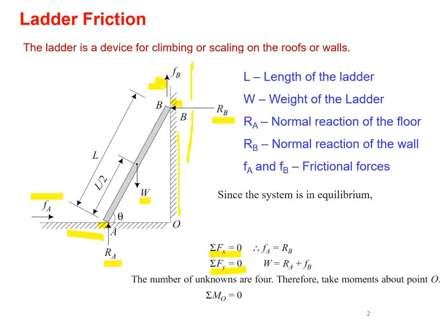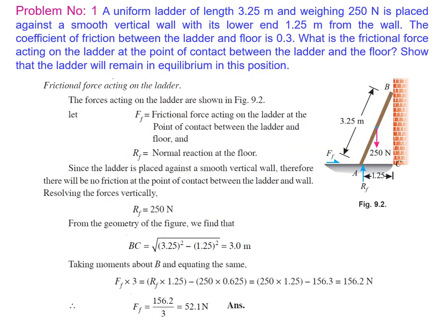Similarly, applying summation of forces in the y-direction equal to zero: the forces in the y-direction are W, RA, and FB, giving W equals RA plus FB. However, there are four unknowns — FA, FB, RA, and RB — but only two equations. Therefore, to solve all four unknowns we take moments about point O as a third equation: summation MO equals zero.